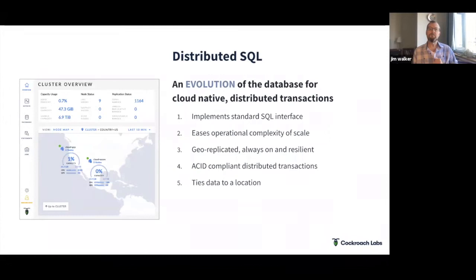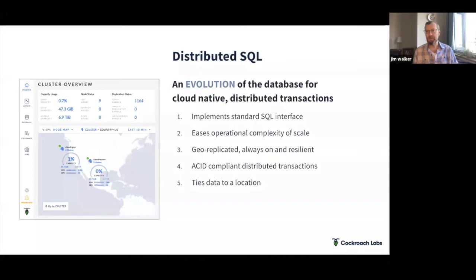For distributed SQL: number one, it has to implement SQL because that's what databases are about — I don't think SQL goes away. It needs to ease scale, be always-on and resilient, and guarantee transactions. If we're going to be a system of record at global scale, you have to guarantee transactions — we implement serializable isolation. Tying data to location is also something every person should be concerned about with distributed SQL, because latency becomes a huge problem and the only way to deal with it is to have data follow the user.